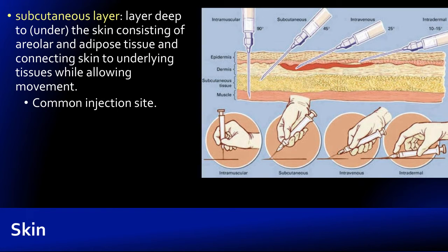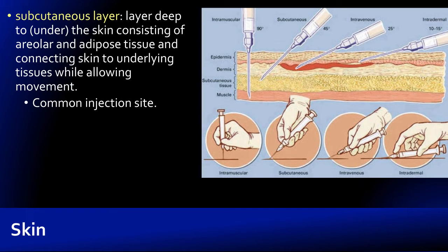Deep to the dermis we have the subcutaneous layer. Subcutaneous means 'under the skin' — cutaneous membrane is another word we use to describe the skin. This layer, which contains areolar and adipose tissue, is a common site for injections. A subcutaneous injection deposits medication into the subcutaneous tissue, where it can be distributed and picked up by blood vessels, typically using a 45-degree angle. It's no surprise we call such a needle a hypodermic needle, because hypodermis is a synonym for the subcutaneous layer.